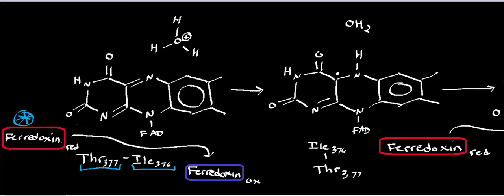These amino acids include threonine-377 and isoleucine-376. You can view the electron as sort of moving around these residues. Ultimately the electron is going to be transferred onto the flavin, which happens to be flavin adenine dinucleotide — FAD. Since these are one-electron transfers, we use fishhook arrows. The electron comes from reduced ferredoxin and moves along threonine-377 and isoleucine-376.